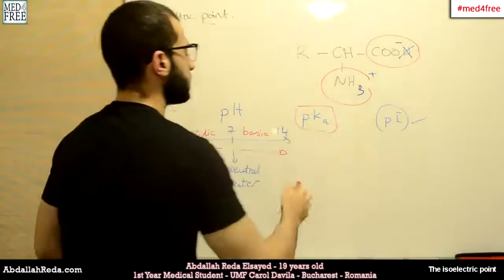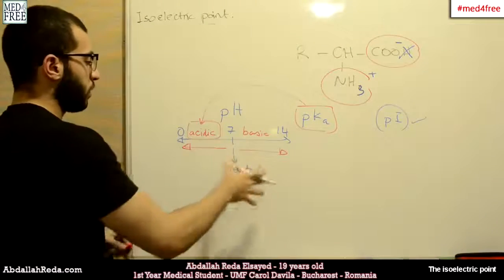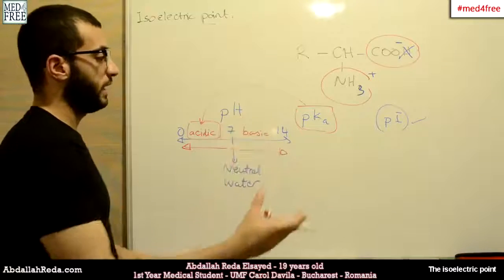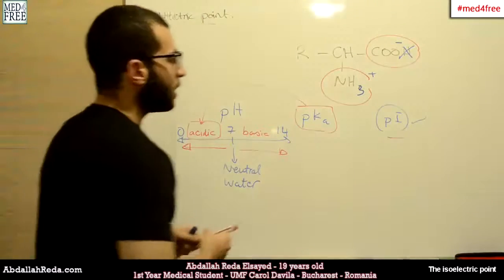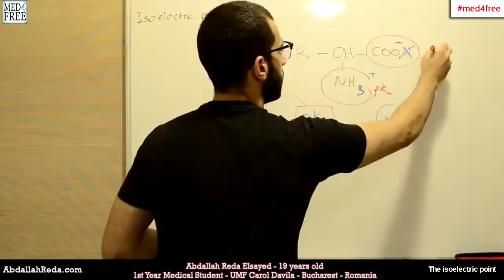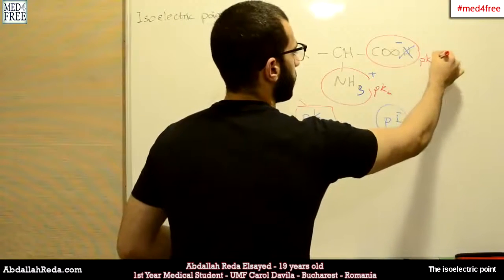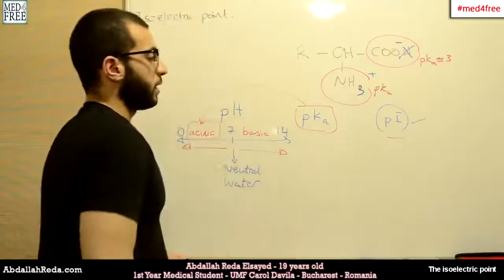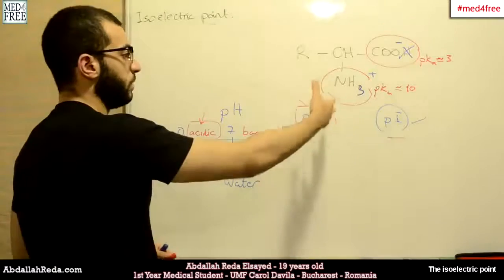The PKA scale is also like the pH scale but is specific for acids and works the same way — the lower the number, the higher the acidity; the higher the number, the lower the acidity. PI is the isoelectric point. The carboxylic group has a PKA of around 3, so it's acidic. The amino group on the contrary has a PKA of around 9 or 10, so it tends more to be basic.